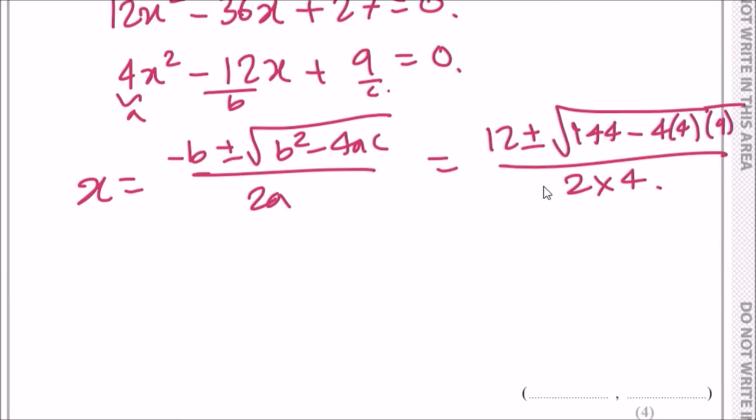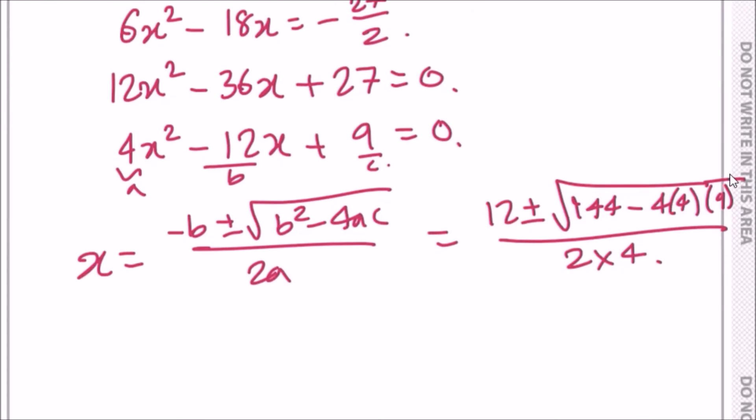My first result when I use the plus value, I get x = 3/2. And now if I use the negative result, I got 3/2. That makes sense because the inside here becomes 0 actually. If you put this in the calculator, you get 0 for the square root part, so it's just 12 over 2 times 4, which is 3/2.